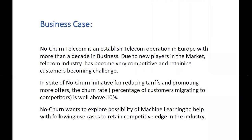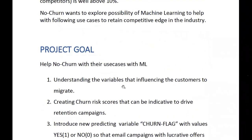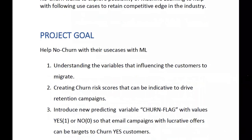The first project goal, as requested by them, is understanding the variables that are influencing customers to migrate. There might be many areas — tariff is one of them, or maybe billing not coming in properly, or something to do with customer relationships. The second goal is creating a churn score as an indicator to drive retention campaigns, showing which aspects have a higher or lower chance score so we can direct campaigns accordingly.